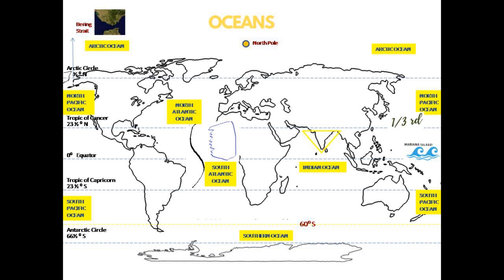The next comes Southern Ocean, which extends towards the North till 60 degrees. And the last one is Arctic Ocean — it's within the Arctic Circle, surrounding the North Pole. A shallow water stretch called Bering Strait connects the Arctic Ocean with the Pacific Ocean.